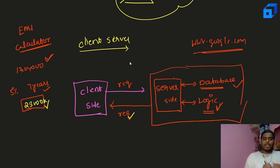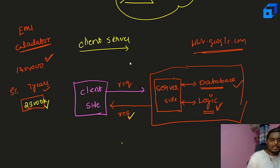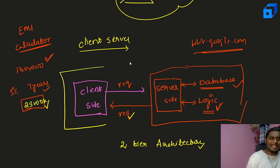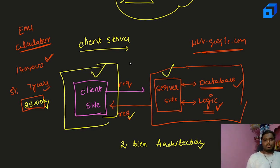This is how client-server architecture looks, and we commonly call this a two-tier architecture. It is called two-tier because there are only two sides involved — the client side and the server side, with nothing else in between.